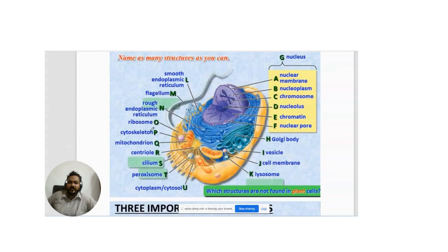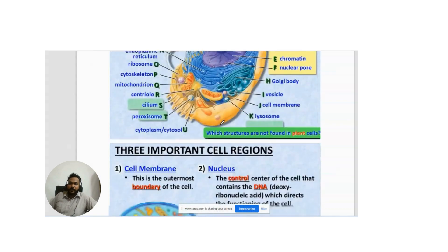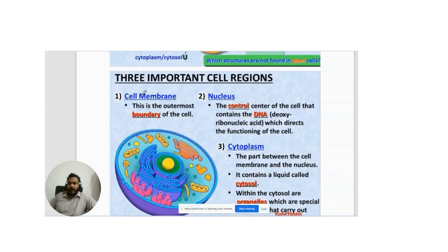The cytoskeleton and ribosomes are also key organelles. Ribosomes are called the protein factory of the cell — they produce protein. The endoplasmic reticulum has two types: smooth and rough. The rough endoplasmic reticulum is responsible for the synthesis of proteins, while steroidal hormones are produced by the smooth endoplasmic reticulum.